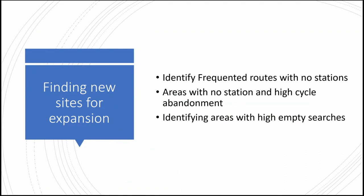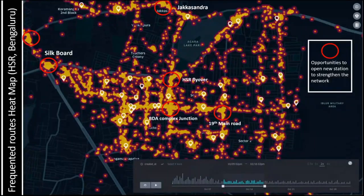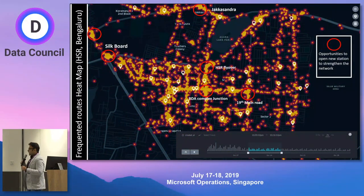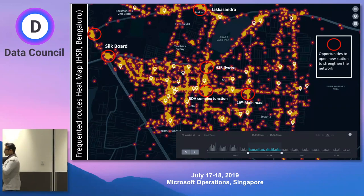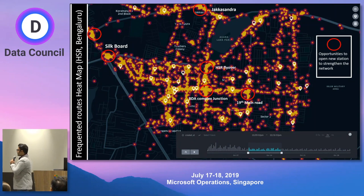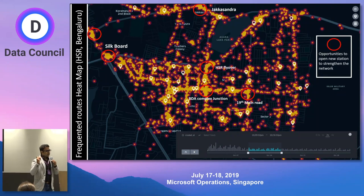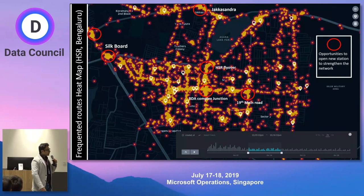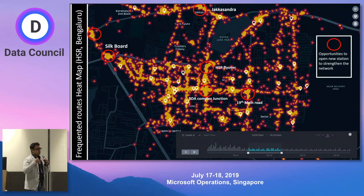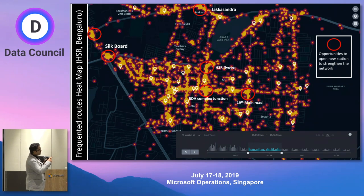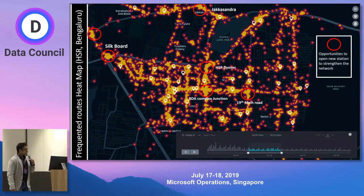The second part is how do I find new stations? We use what we call a stop map. We track bicycles, identify where they have stopped, and plot the density of stops. For example, at a place called HSR Flyover, many bicycles are stopping but we have no station. This likely means there's a supermarket there where people want to go. Customers have to ride back to the nearest station to drop the bike, which is inconvenient. This is how we identified sub-areas — HSR Flyover, Silk Board, 19th Main, BDA Complex Junction — to introduce new stations.